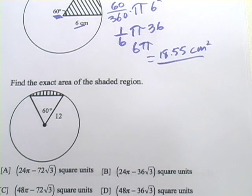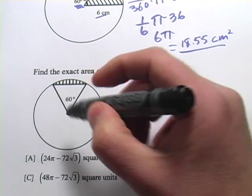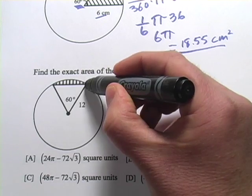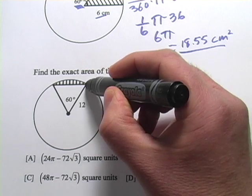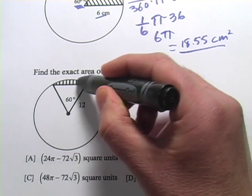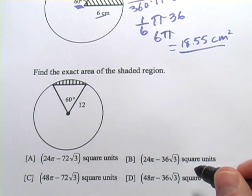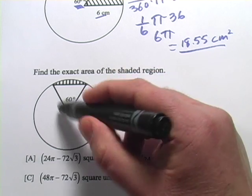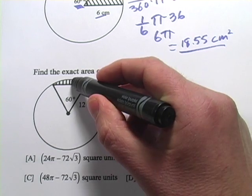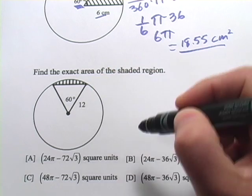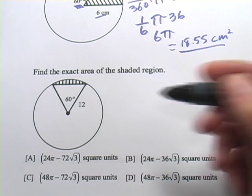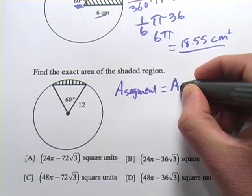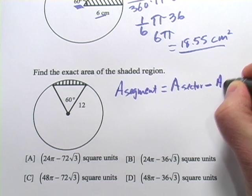Next, we have a segment. A segment is created in a circle when you have a triangle formed — it's almost like you're cutting out a sector, but then you connect the two points where the sector edges meet the circle. What's left — this little nipped-off area at the top — that's a segment. The area of a segment is the area of the sector minus the area of the triangle.